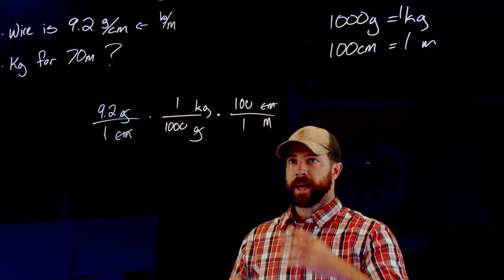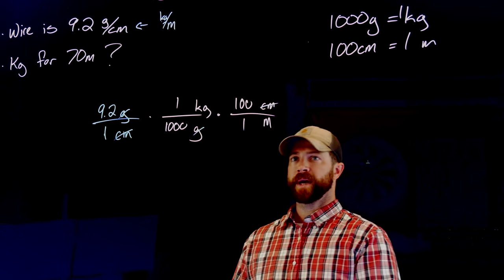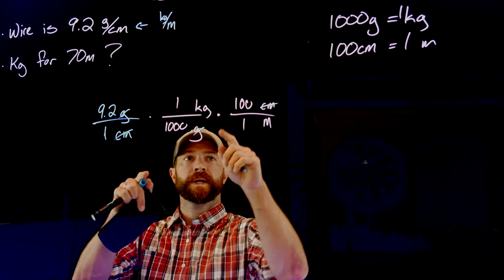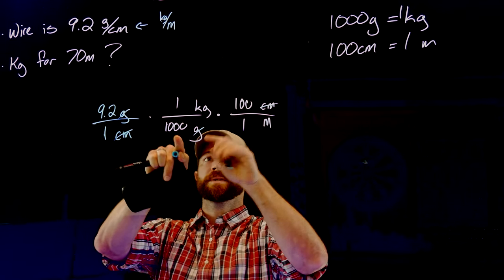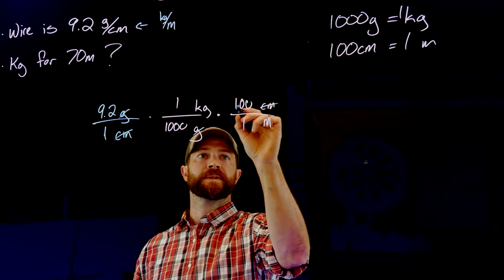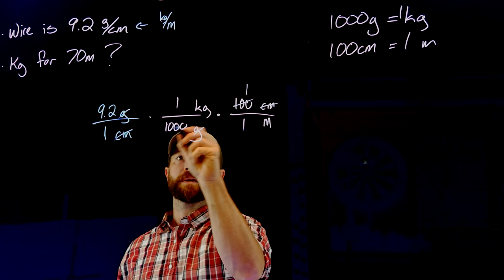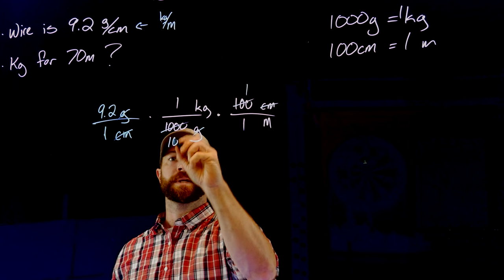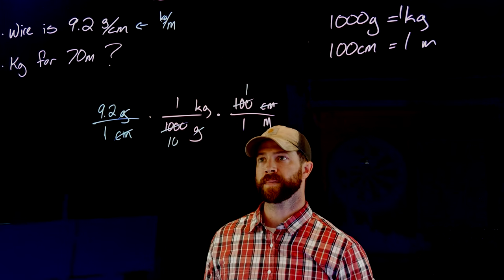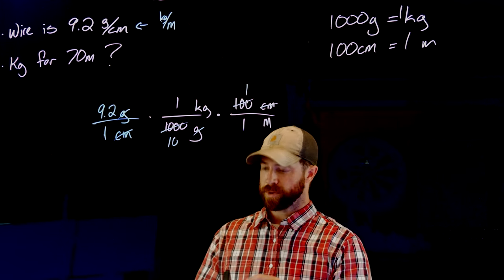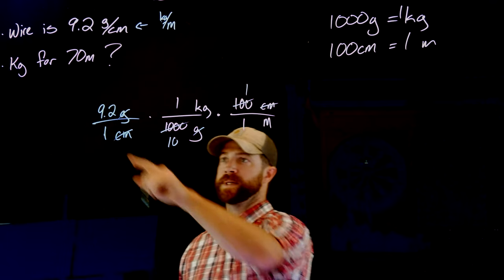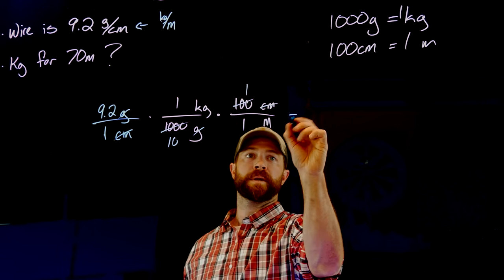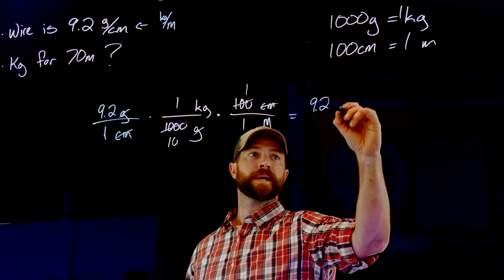I'm just going to multiply straight across. I can do some more cross-canceling. I'm going to do that first, actually, before I multiply across. This is 100 and 1,000. I can divide out the factor of 100 here. So I get a 1 here and there's 10 hundreds in 1,000. And now I'll multiply straight across. So we see 9.2 times 1 times 1 is 9.2 kilograms.